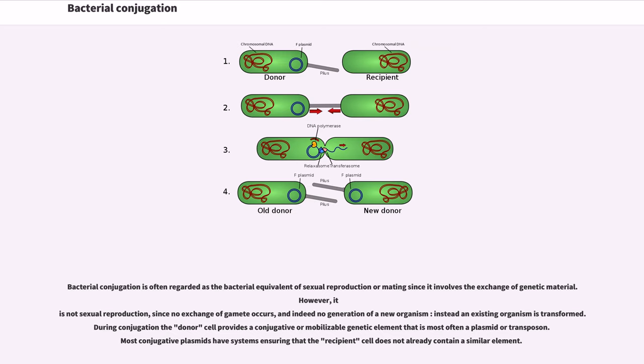Instead, an existing organism is transformed. During conjugation, the donor cell provides a conjugative or mobilizable genetic element that is most often a plasmid or transposon. Most conjugative plasmids have systems ensuring that the recipient cell does not already contain a similar element.